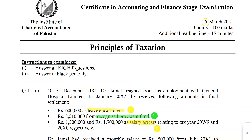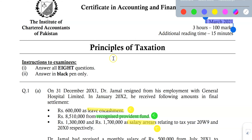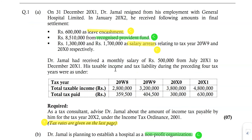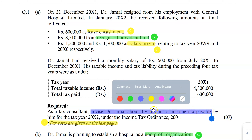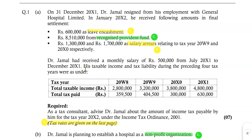This video is about question number one of the March 2021 attempt. In this question, an individual case is discussed. Dr. Jamal is his name, and he has some benefits from his employment. You have to advise about the amount of income tax payable. This means there are some options available that you can exercise your tax position differently, looking at the contents and treatment under tax law.